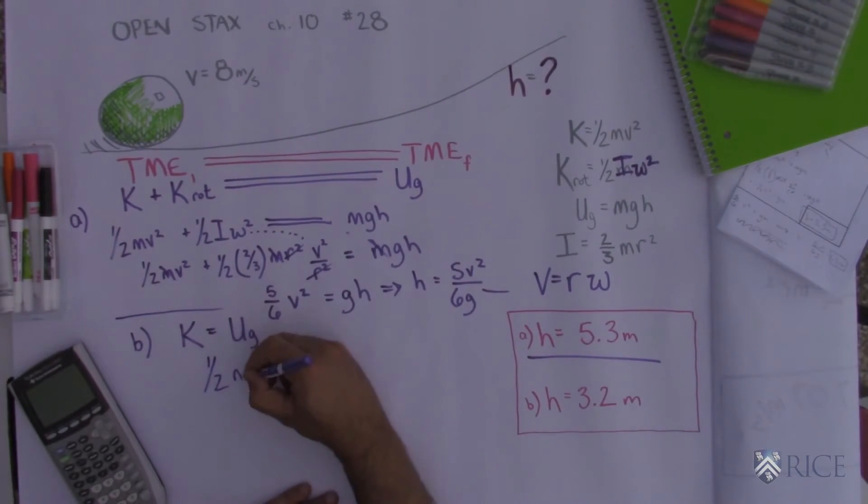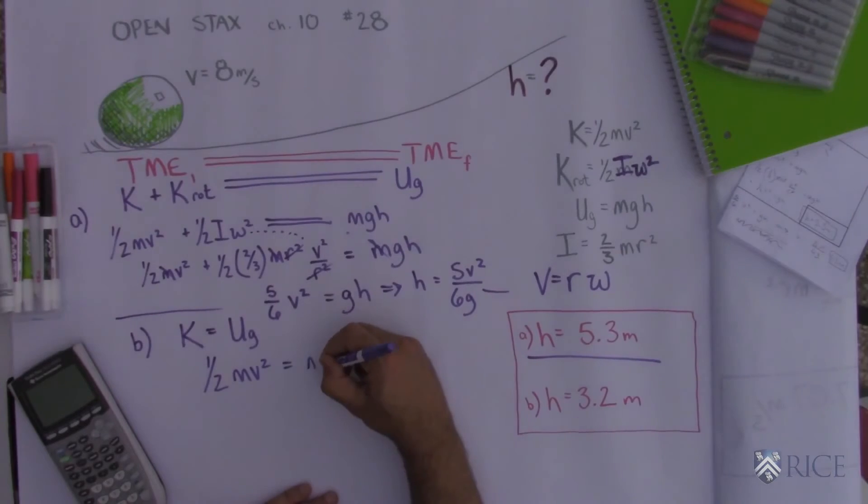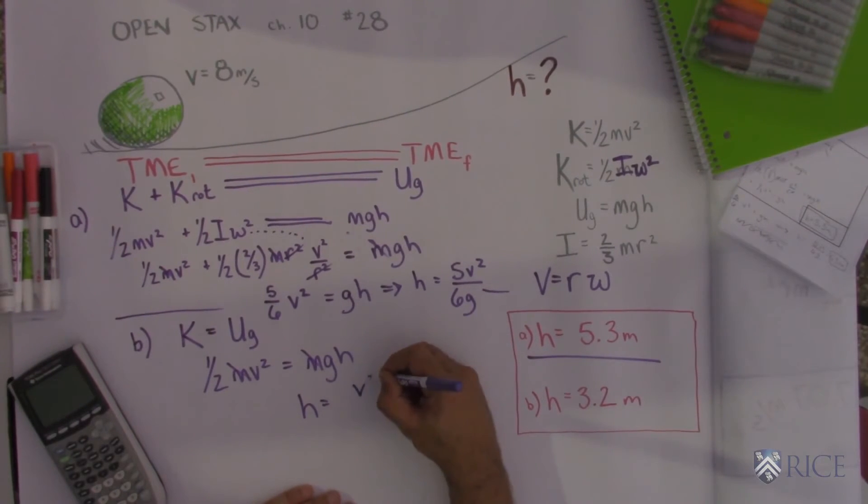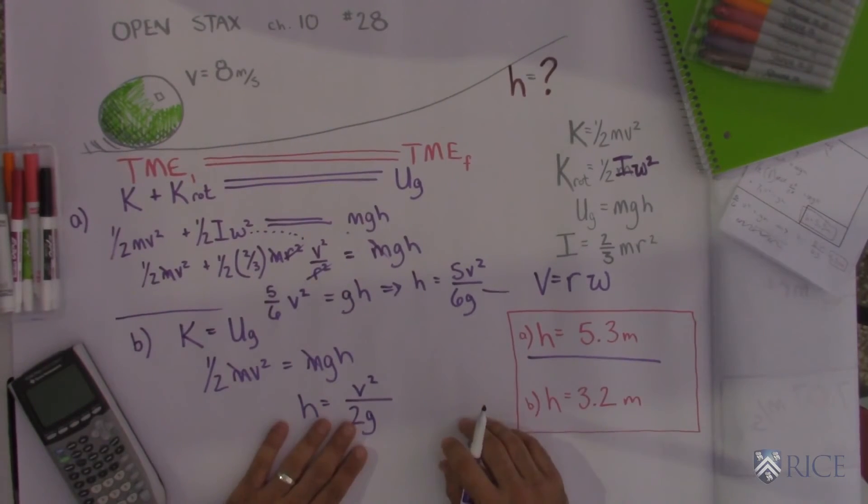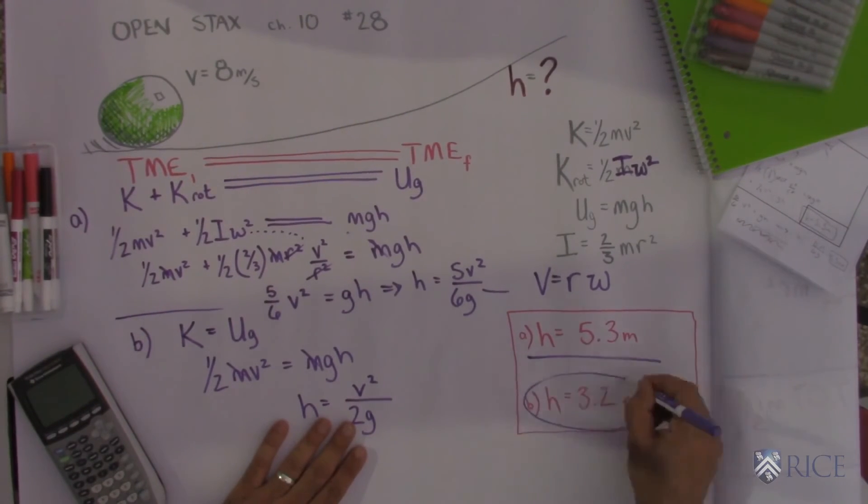So mathematically I've got one-half mv squared equals mgh. Again mass cancels and this time the height is gonna be v squared over 2g. Put that into my calculator and that comes out to be 3.2 meters.